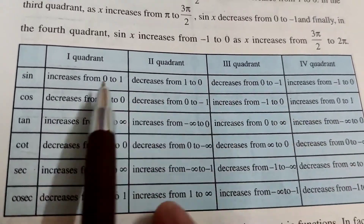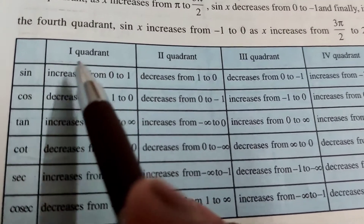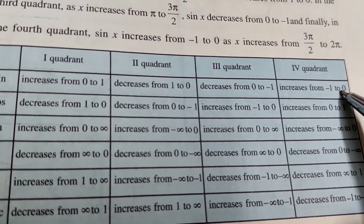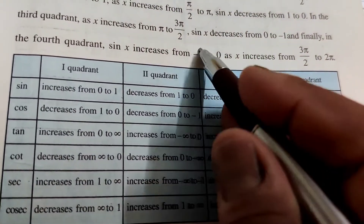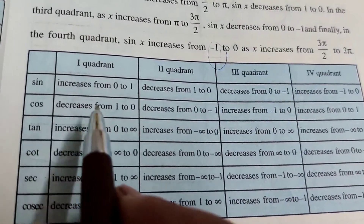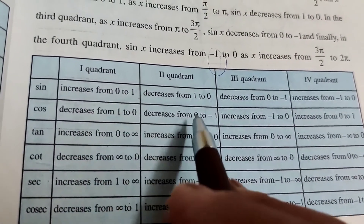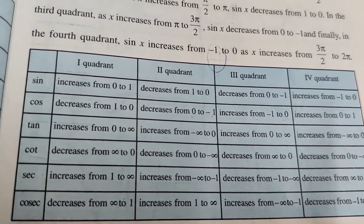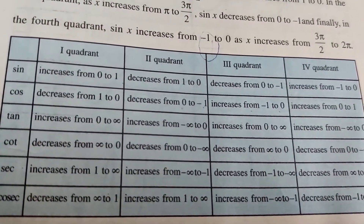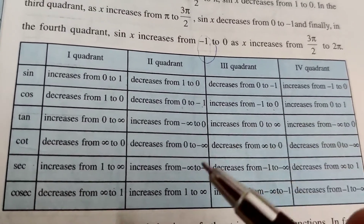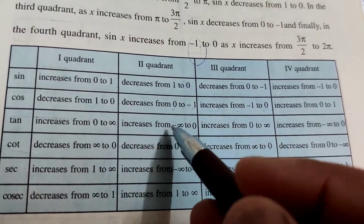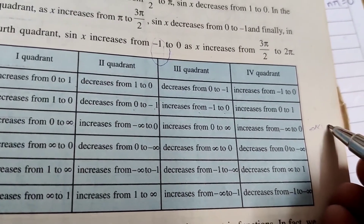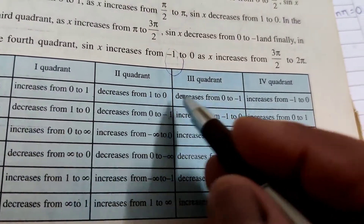The variation of values: sin x increases from 0 to 1 in the first quadrant, decreases from 1 to 0 in the second, then 0 to -1 in the third, and -1 to 0 in the fourth. For cos x: decreases from 1 to 0, then 0 to -1, then -1 to 0, then increases back to 1. For tan x: 0 to +∞, then -∞ to 0, and so on.